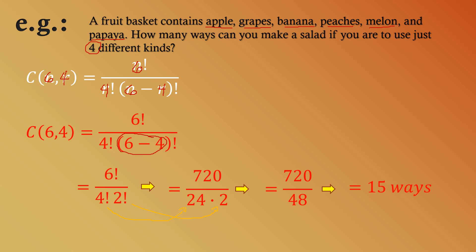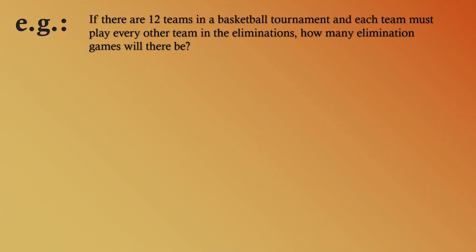Another example: if there are 12 teams in a basketball tournament and each team must play every other team in the eliminations, how many elimination games will there be? Since team A versus team B is not different from team B versus team A, this problem falls under combination — order doesn't matter. Here, n equals 12 teams. Since only two teams play each other at a time, our r equals 2.